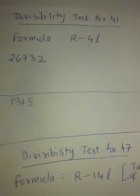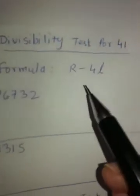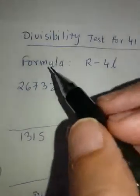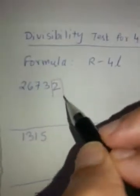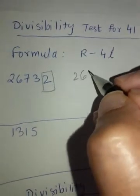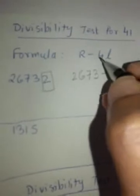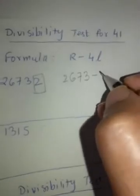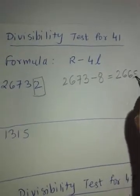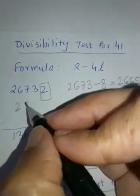Now let's try divisibility test for number 41 and now the formula is R-4L. This is the last digit, remaining part 26732, 4L is 4 times 2 is 8, which comes out to 2665. I am copying it here.